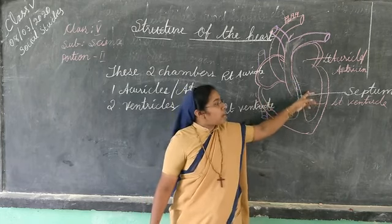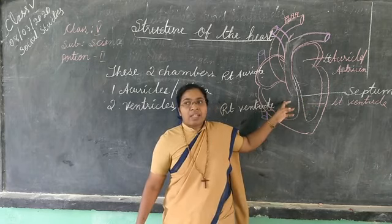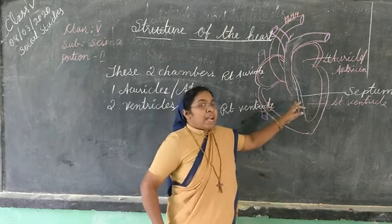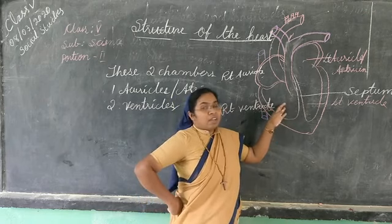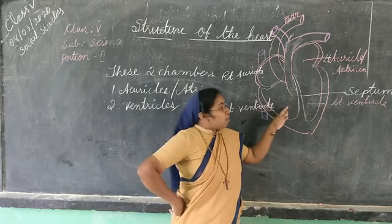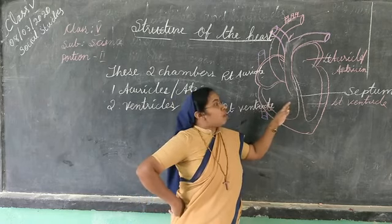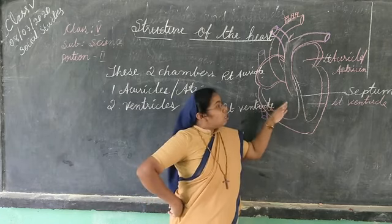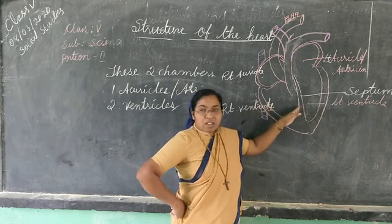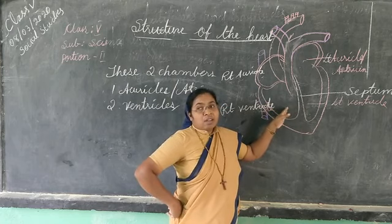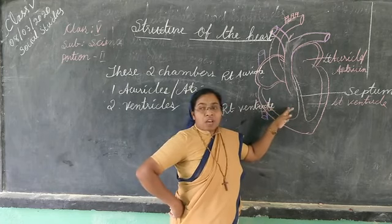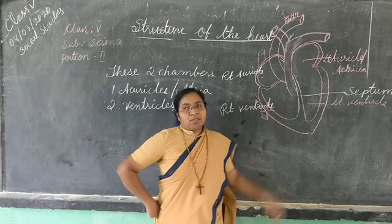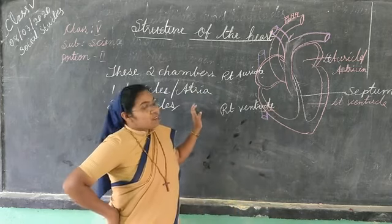Here in the ventricles, the blood is filled. From the ventricles, the blood goes to the body parts and to the lungs. This is the heart and its structure.